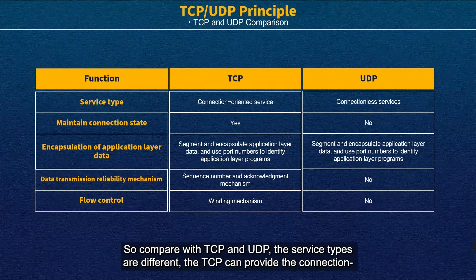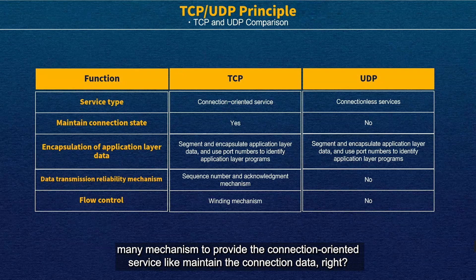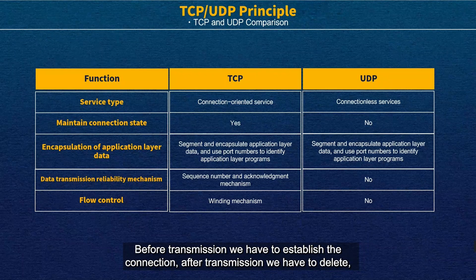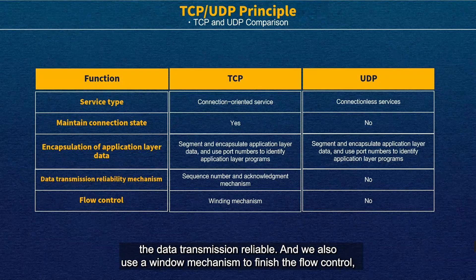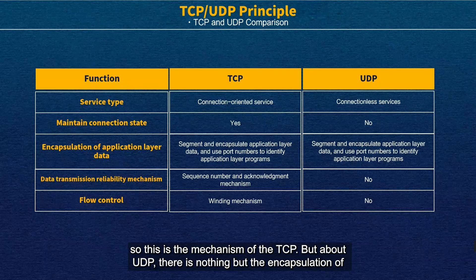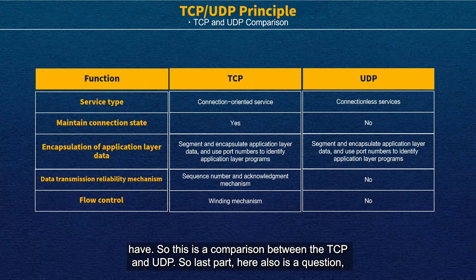Compared with TCP and UDP, the service type is different. TCP provides connection-oriented reliable service, while UDP only provides connectionless service. TCP requires many mechanisms to maintain reliability — establishing a connection before transmission, using sequence numbers and acknowledgements during transmission, using window mechanisms for flow control, and tearing down the connection after transmission. UDP has none of these, but both TCP and UDP encapsulate application layer data — the basic function of the transport layer.